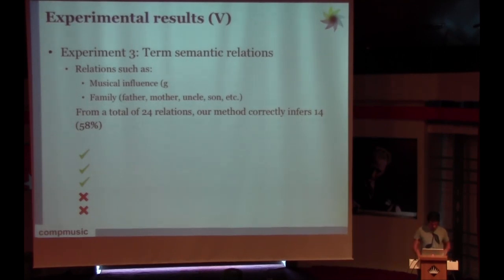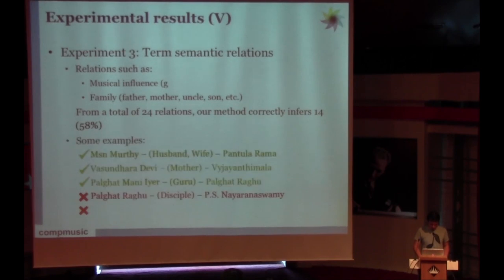Finally, this is the last experiment. It's about term semantic relations. We explored the forum to find relations between two terms, for example related to the musical influence. This here should have said guru and disciple and the family relations like father, mother, uncle, son. And from a total of 24 relations that we could match in this forum, 14 of them were correct.